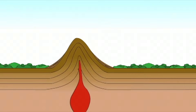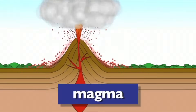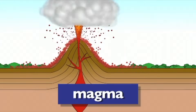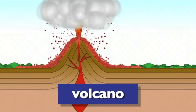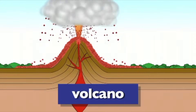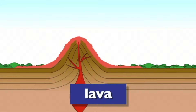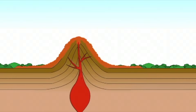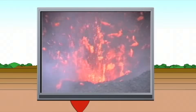Sometimes melted rock from deep inside the Earth, called magma, forces its way through the crust. We call this a volcano. When the magma oozes out of the Earth, we call it lava. As the lava cools, it turns to solid rock, and that's the beginning of a mountain. There are active volcanoes all over the world.